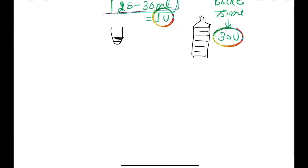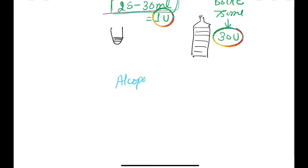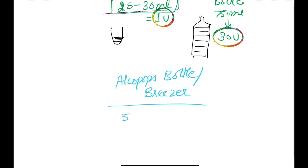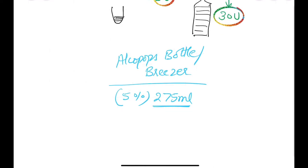Last but not the least, alcopops or breezer bottles. They have a concentration of around 5% and generally come in a standard bottle of around 275 ml — similar to a half pint. And it is equivalent to 1.5 units.